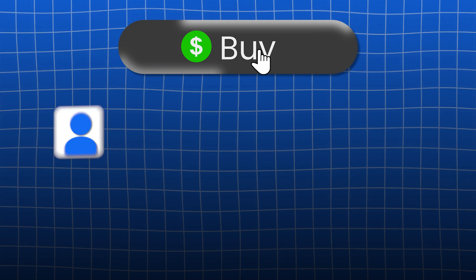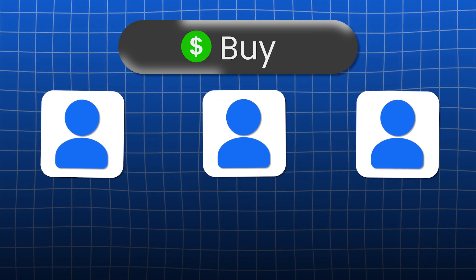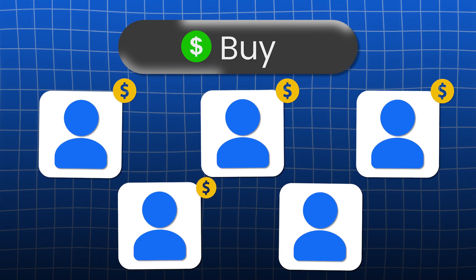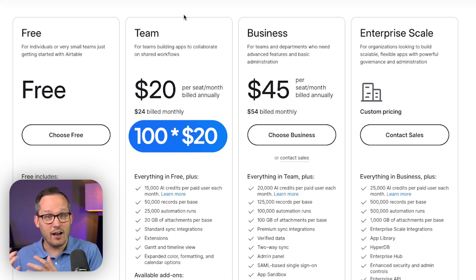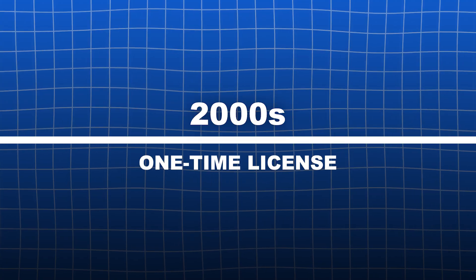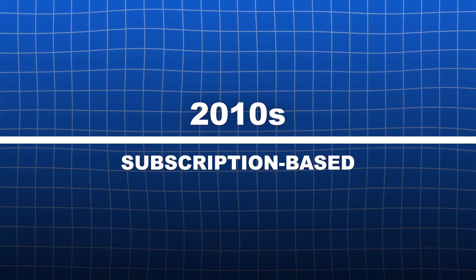Let's talk about the most prolific method of charging for software, which historically has been charging for every single user who utilizes your application. This user-based pricing we still see in applications like Airtable. So if you have a single user, you'd pay $20 a month. If you have 100 users, you'd pay 100 times $20 per month. Historically, that was seen as a way to tie the price of the software to the value being created by the business, because as that company grows and adds headcount, more people benefit from that software.